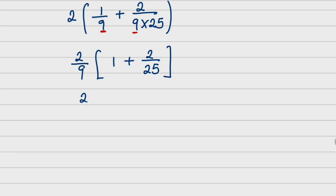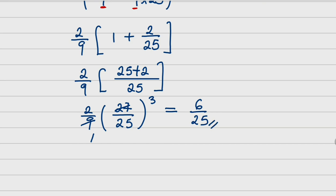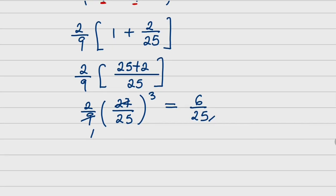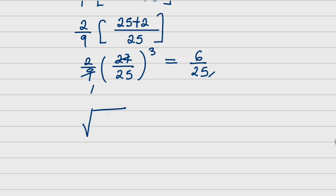Now, doing this, I am going to have 2 over 9 into — the LCM is 25 — so I have 25 plus 2. Close the bracket. This is 2 over 9 into 27 over 25. We have 2 times 3 equals 6. Everything boils down to 6 over 25. But this is not the final answer, because we are going to find the root. So it is going to be the root of 6 over 25, which gives root of 6 over 5. So this is the final answer. Thank you for watching and make sure you subscribe for more interesting videos.